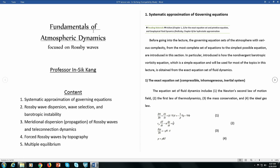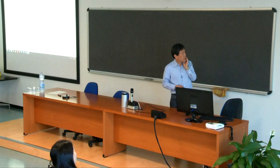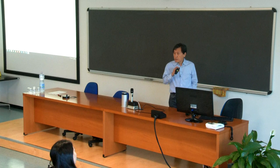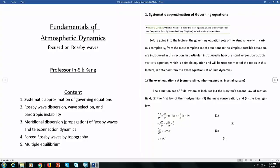I'm going to talk about basic wave properties, then forced Rossby waves, and then how multiple equilibrium comes from wave–mean flow interaction. I will mainly cover the first multiple equilibrium theory proposed by Charney and DeVore in 1979. I'll use the simplest possible equation to deal with Rossby waves, obtaining it from systematic approximation of the governing equations.